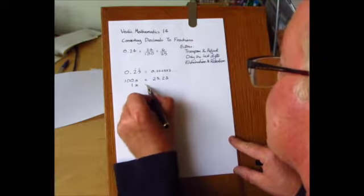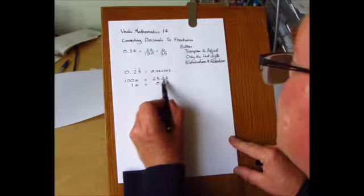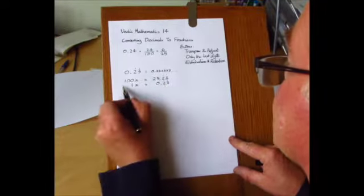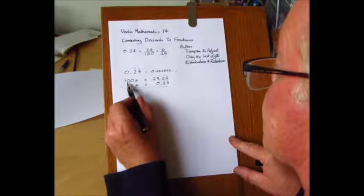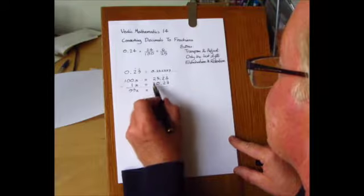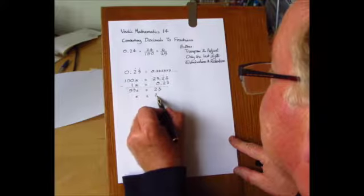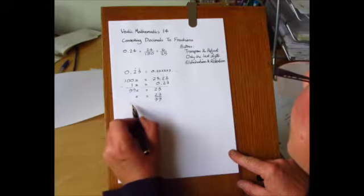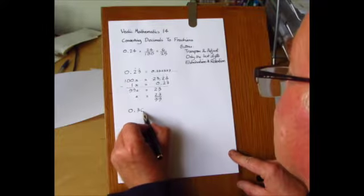Then we write down 1X is 0.23 recurring, and we are seeking to eliminate these last digits. So we can subtract these two equations one from the other and we're left with 99 lots of X on the left, because 100X minus 1X leaves 99X, and these two numbers subtracted is 23. Then we just adjust this making X equal to 23 over 99, and that's a nice simple case.